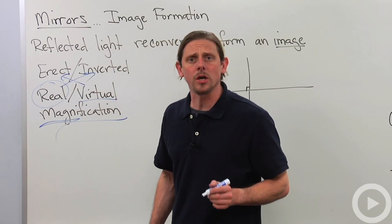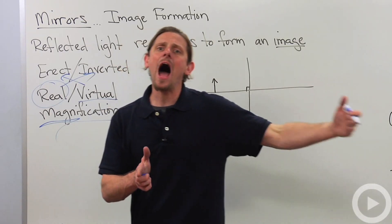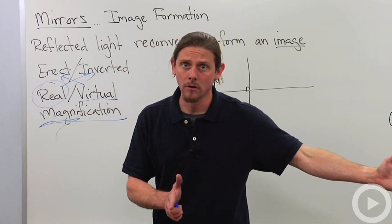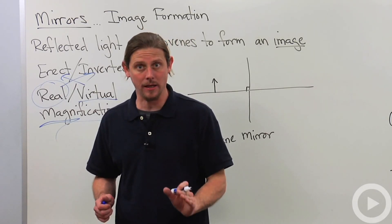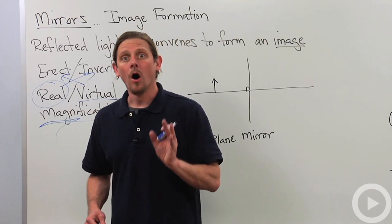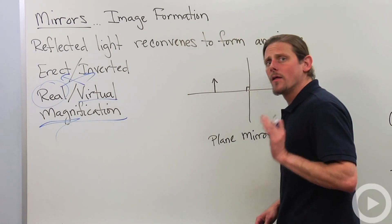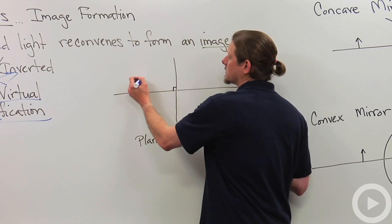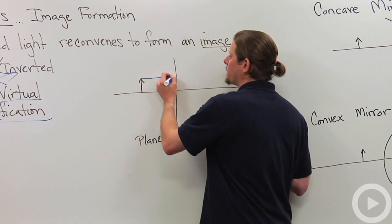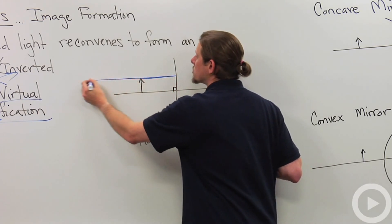The magnification is always given by the ratio of how far the image is from the mirror divided by how far the object is from the mirror. So let's just do this real quickly with the simplest case, that of a plain mirror. A plain mirror goes like this. You've got light coming from the object and it just reflects straight back.